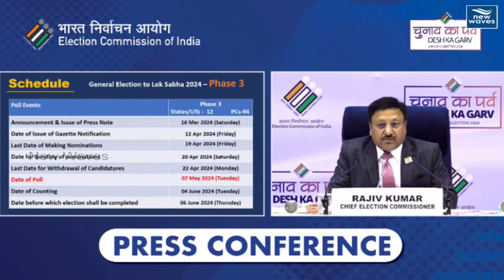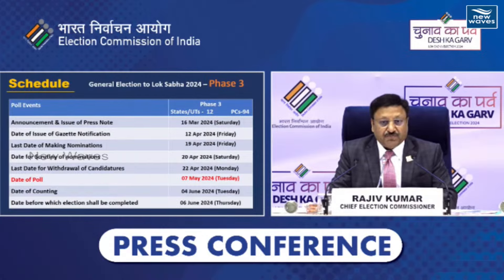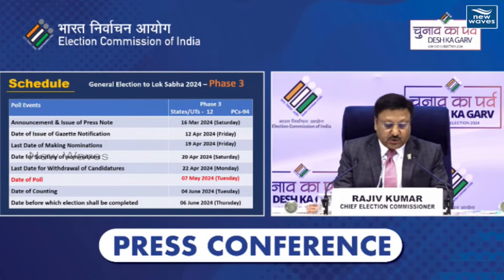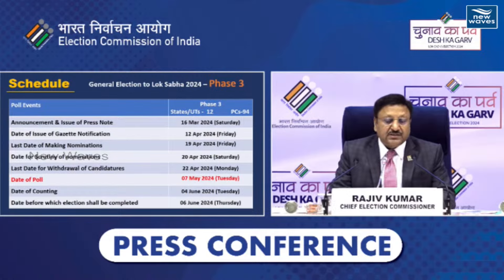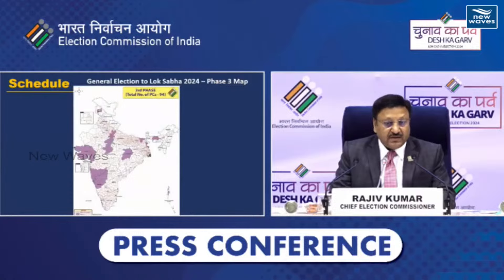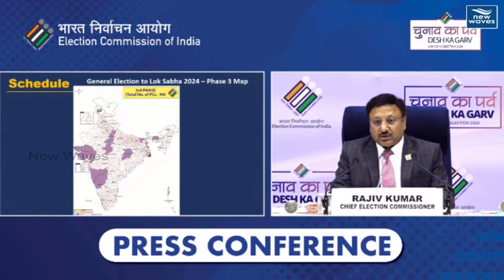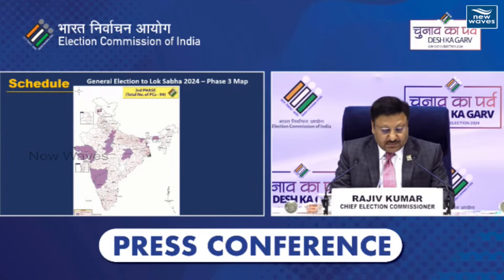Phase three would be from 12th of April and date of poll will be 7th of May. Ismein bhi total 12 states us samay mein jaa rahi hongi aur is phase mein teen naye raajyon mein chunaav shuru hoga. Rajasthan, Tamil Nadu, Kerala cover ho chuke honge, Gujarat ismein cover kar lenge, Northeast poora cover ho chuka hoga, aur teen naye raajye bhi judenge.